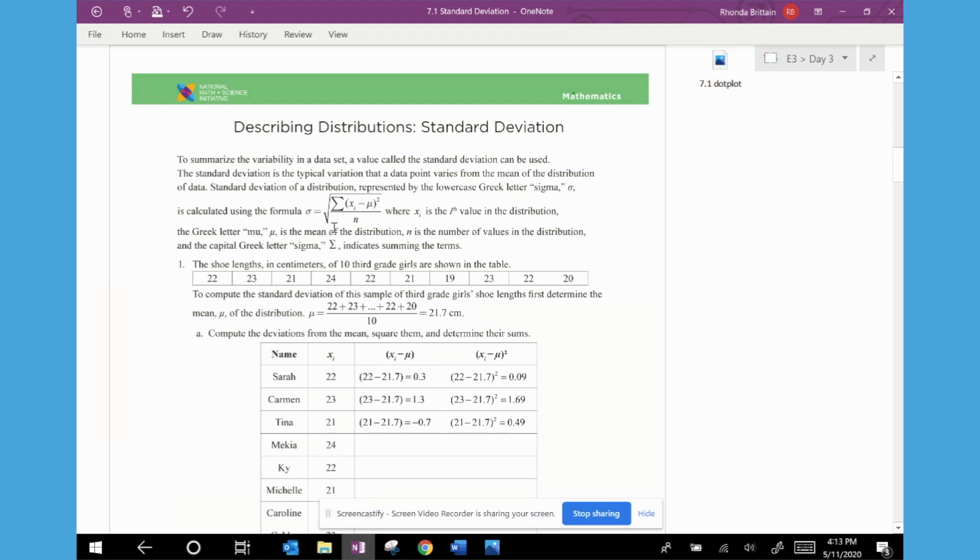So if you had five data values, then you would have a calculation that was x1 minus mu, and then you would square, and x2 minus mu and square, and all the way up to x5 minus mu and square.